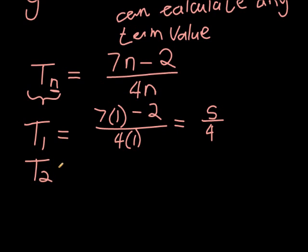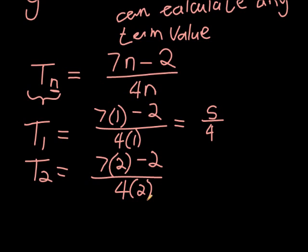For T2, N is 2. Seven times 2 is 14, minus 2 is 12, divided by 4 times 2, which is 8. So 12 over 8, which simplifies to 3 over 2.